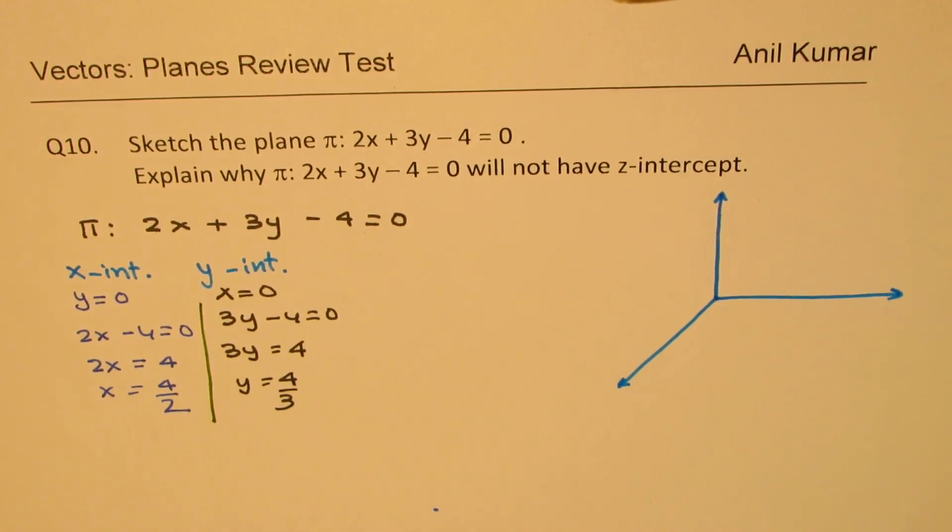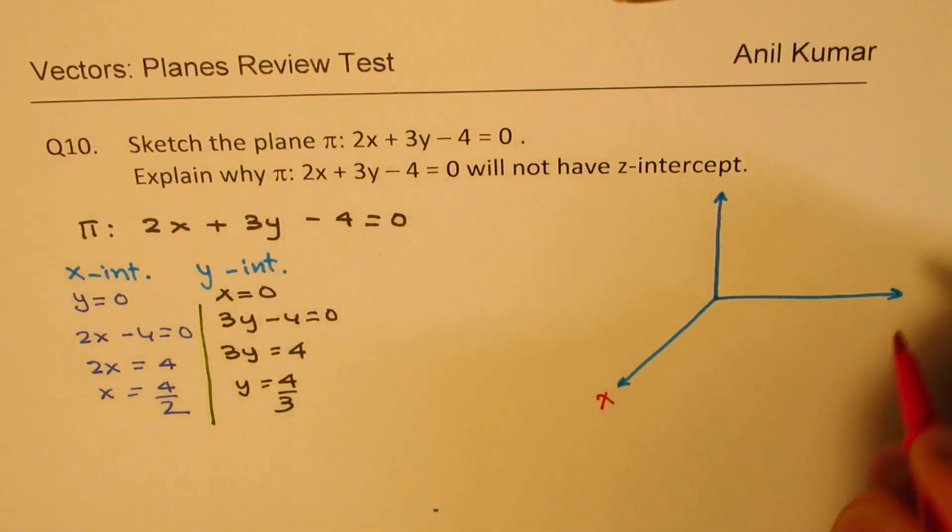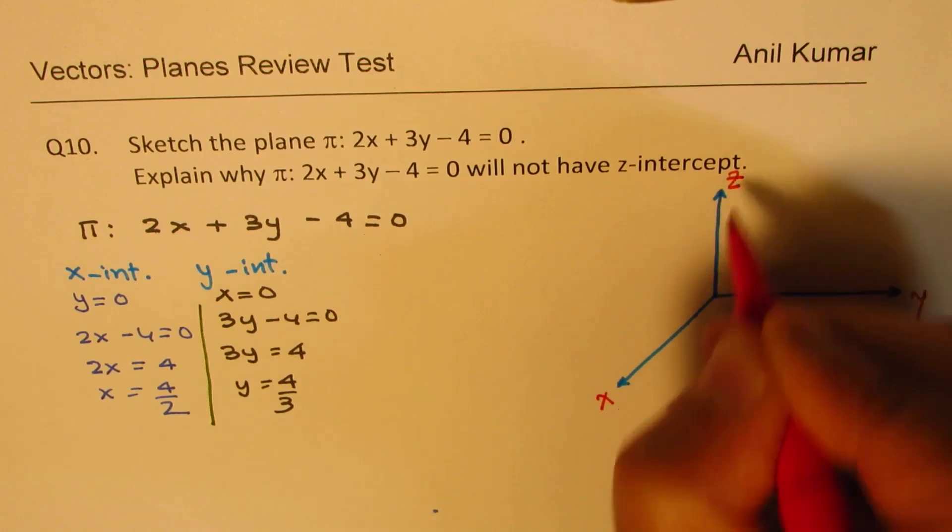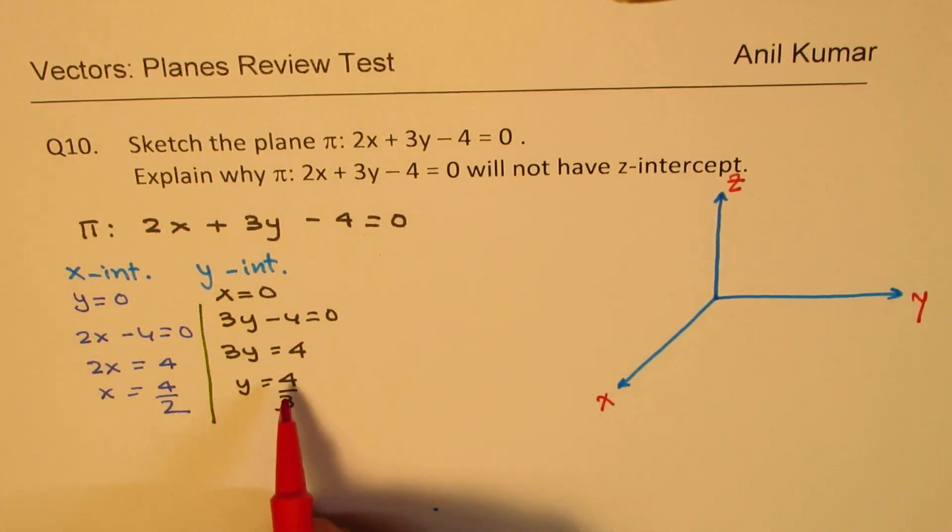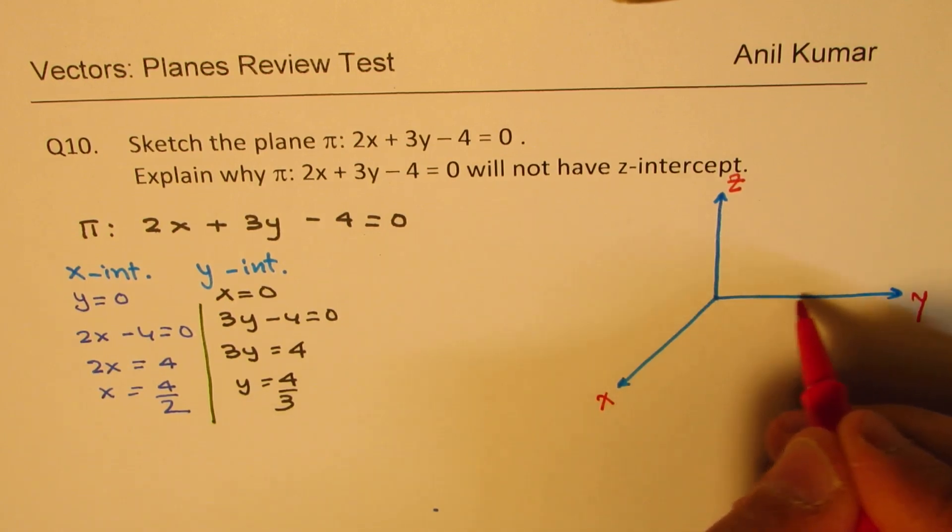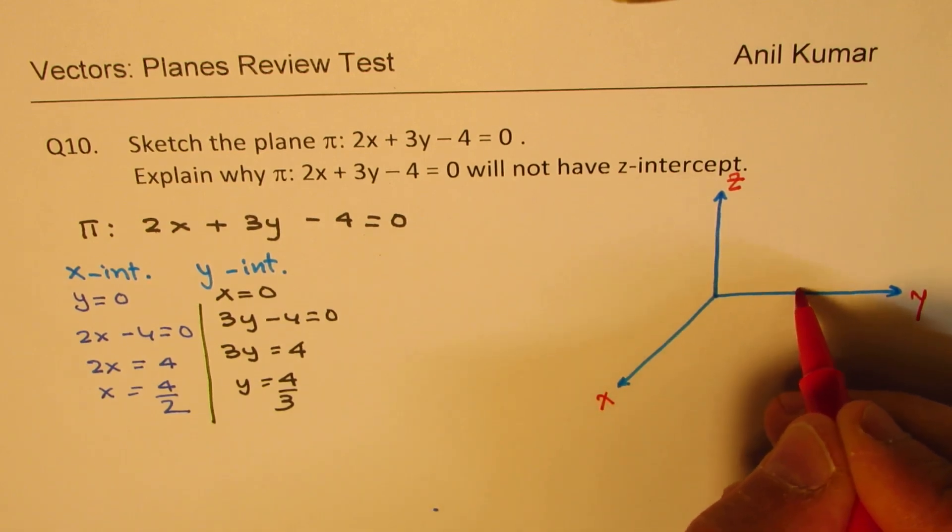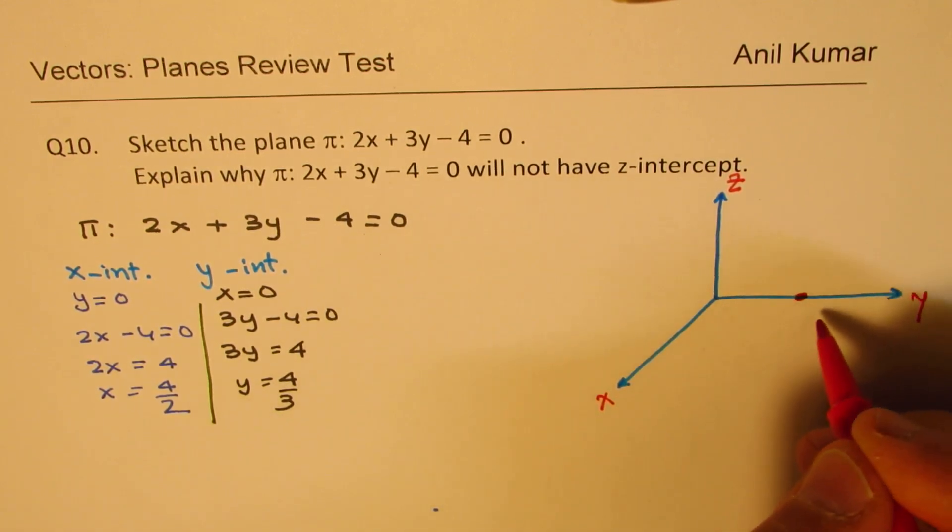So on this, we'll represent x along this direction, y and z. So when you say y is 4/3, that means, let's say this much is y, slightly less than 1. Let's say this is your y-intercept, which is a point for us, 4/3.